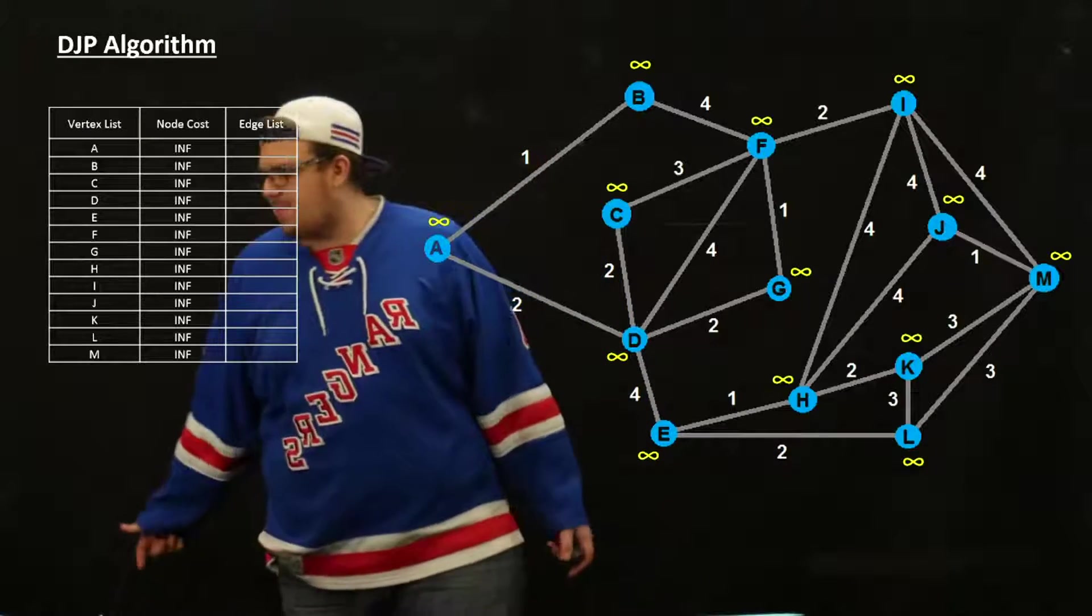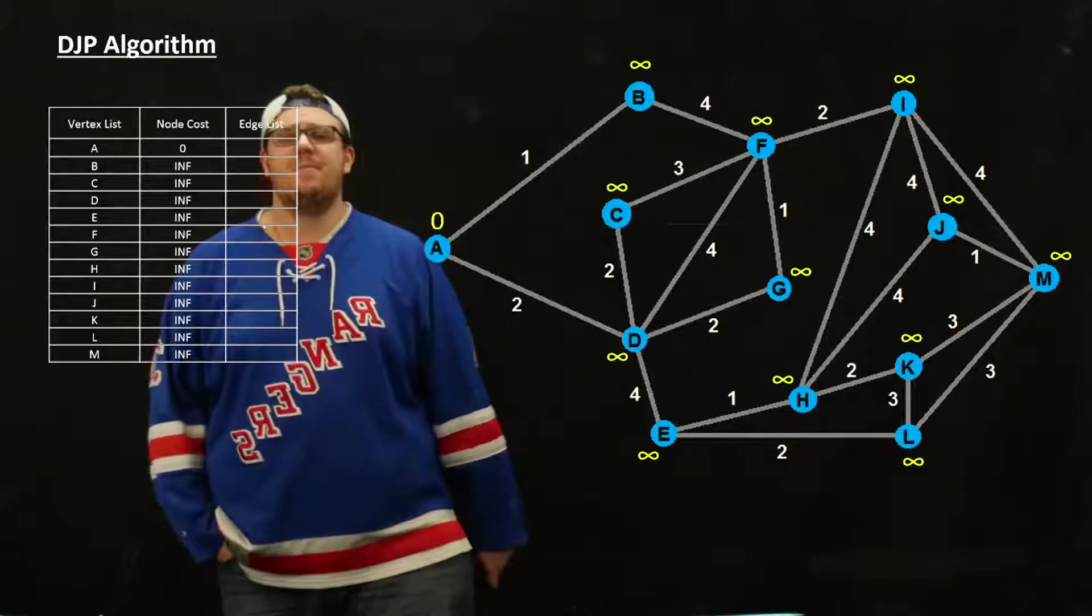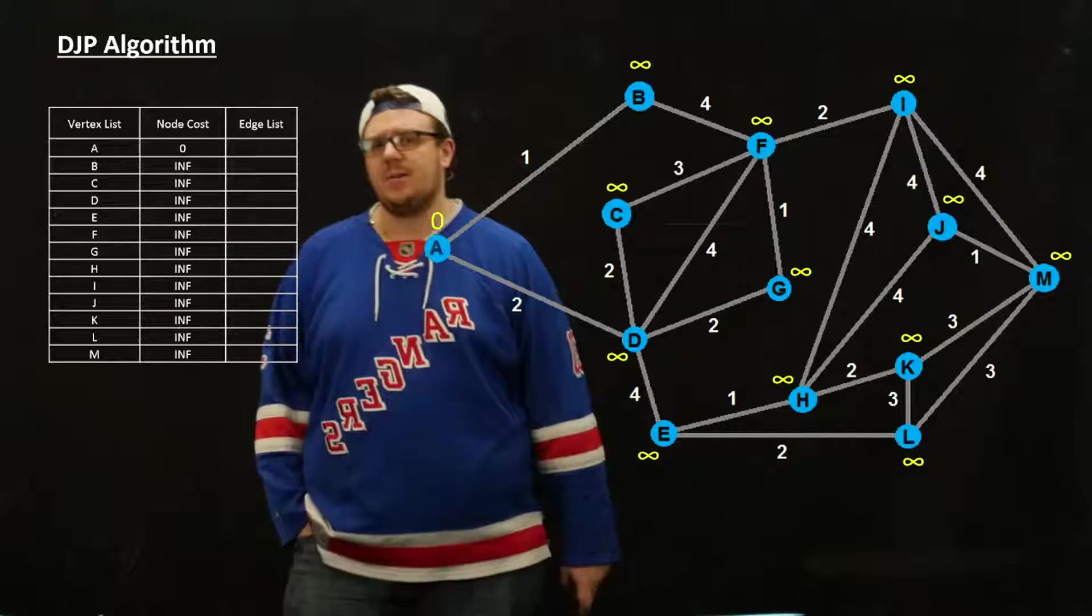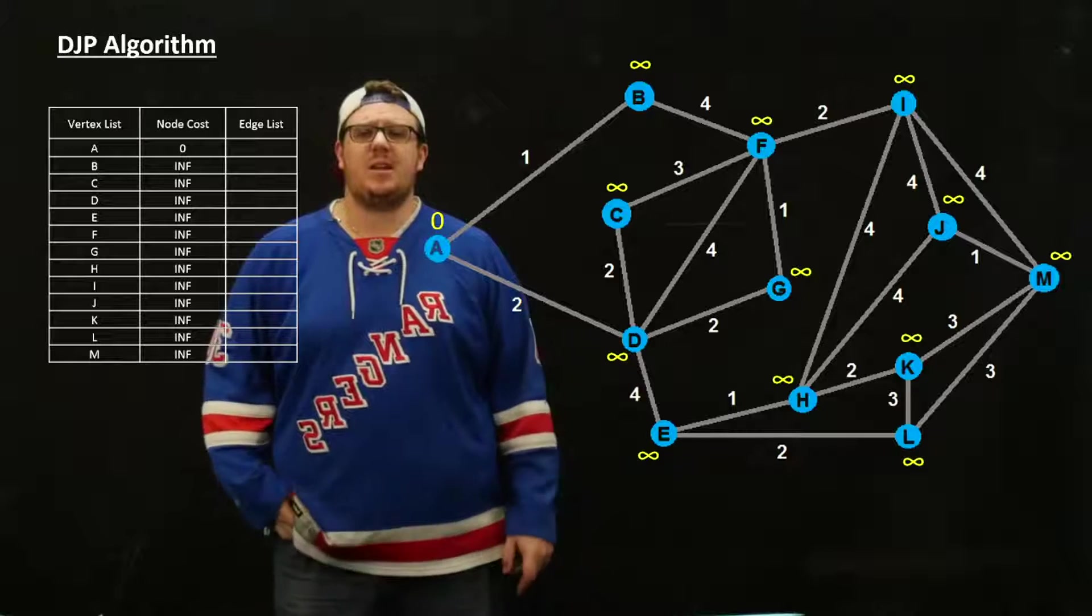The next thing you have to do is pick a starting node. The starting node we're going to pick today is A. So we're going to start at A and initialize that as having a node cost of zero. That was updated there.